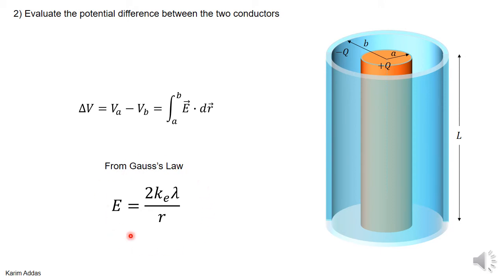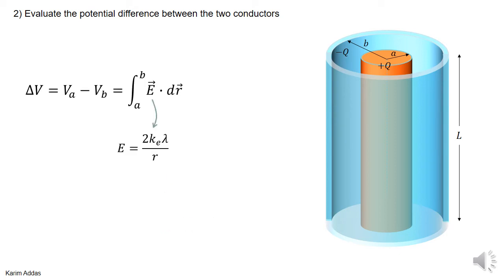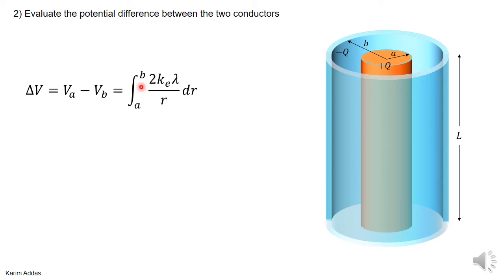From Gauss's law, the electric field between the conductors is 2ke·λ over r. Substituting this into the integral for VA minus VB, since the electric field is radially outward, E·dr equals E·dr, so we get 2ke·λ over r, dr.